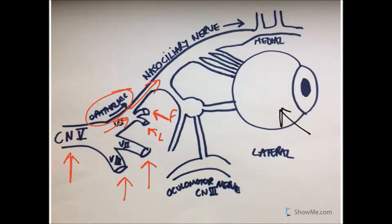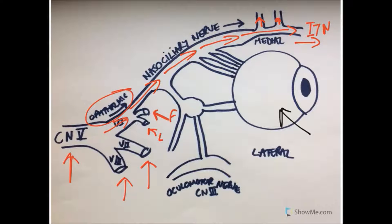Let's label some branches of the nasociliary. As the nerve continues, we have ethmoidal branches — anterior and posterior — and eventually it becomes a terminal branch called the infratrochlear nerve, which is purely sensory. There are also nerves coming off going to the eyeball called long ciliary nerves, and a branch of the nasociliary comes off proximally going to the ciliary ganglion — this big structure that has various branches coming to it and going from it.